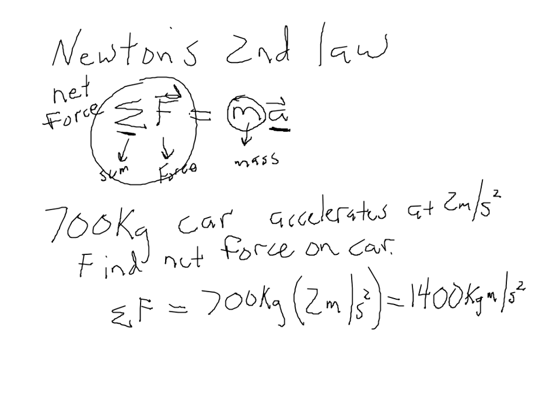This unit — the kilogram meter per second squared — shows up any time we're talking about force, and it's a pretty cumbersome unit. So we give that unit combination a special name: the Newton, abbreviated with a capital N. Any time you see Newton, you can replace it with kilogram meter per second squared, or vice versa. That also means whenever you're using Newton's second law, you want to put your mass in kilograms, distances in meters, and time in seconds, so that you end up with a force in Newtons.